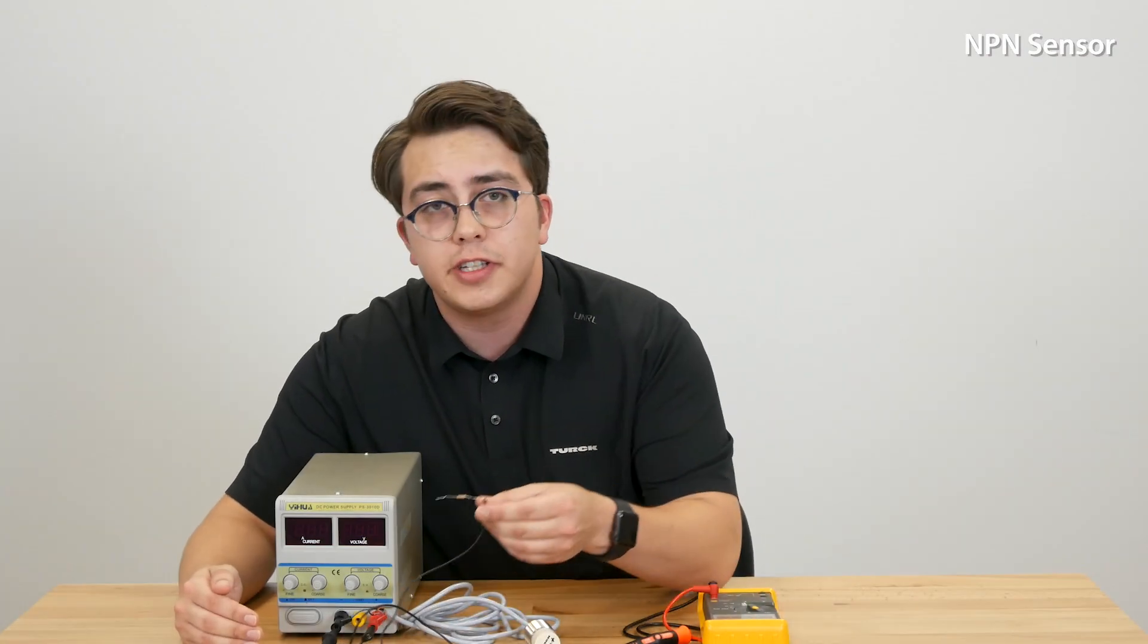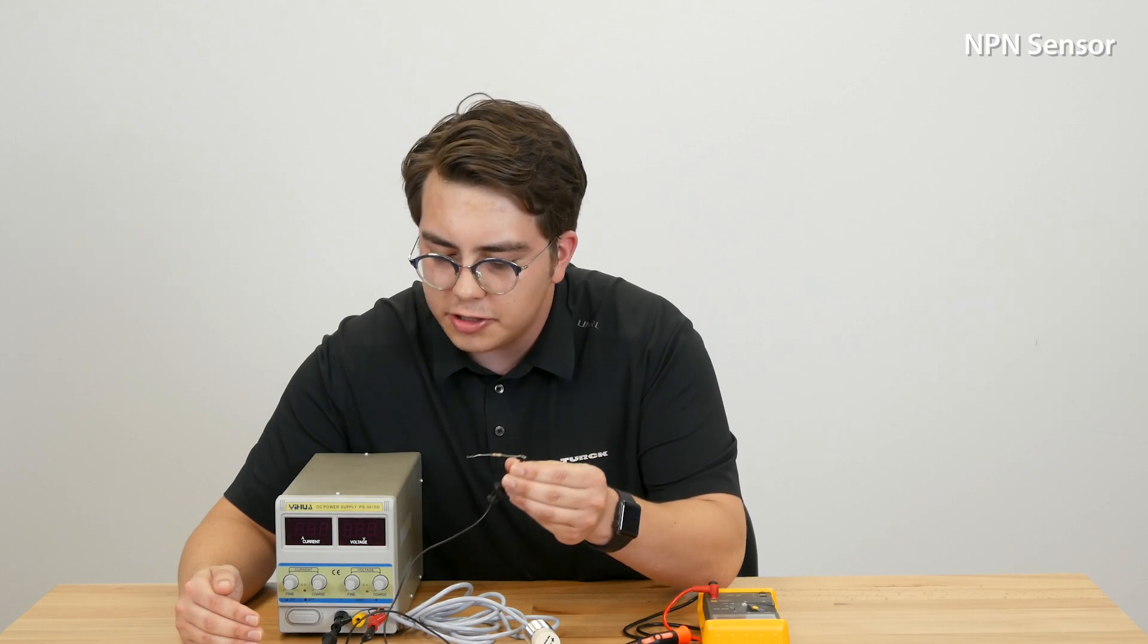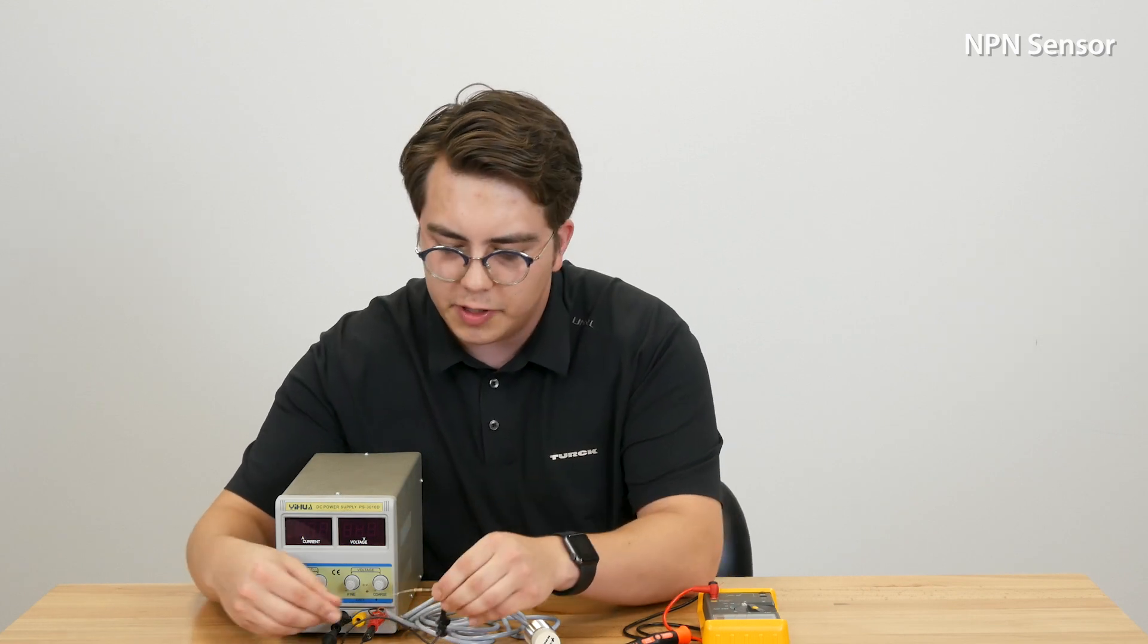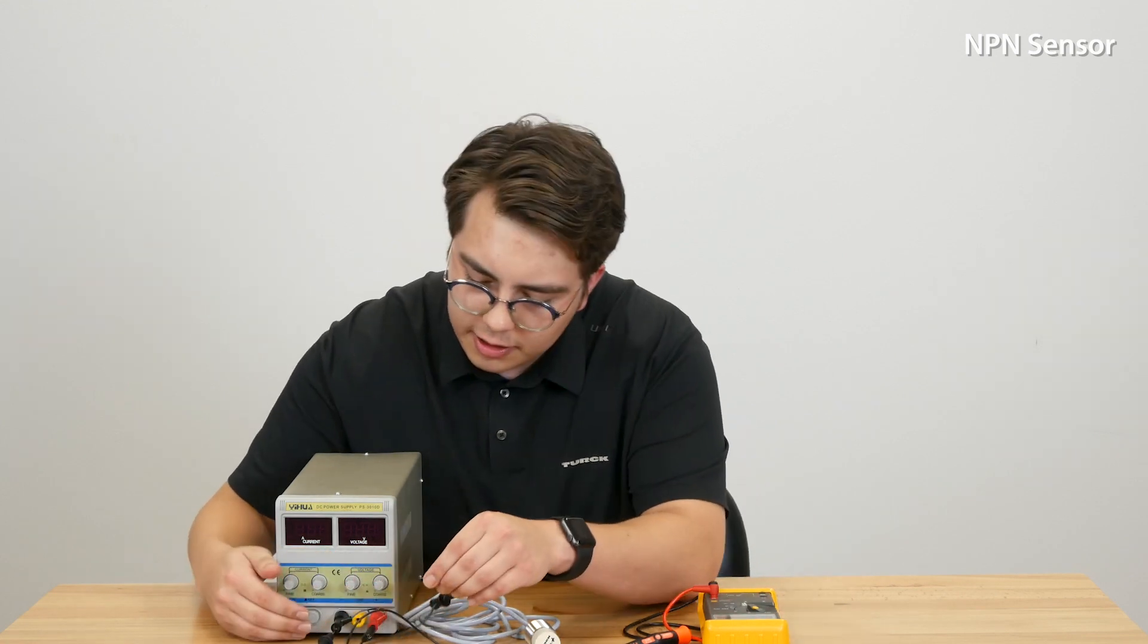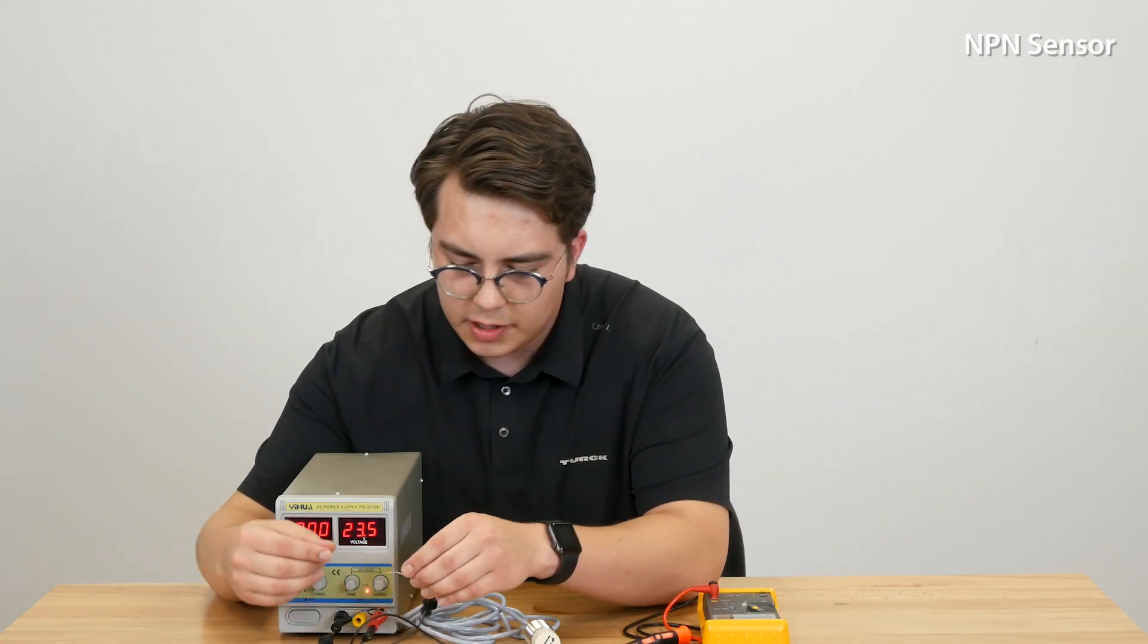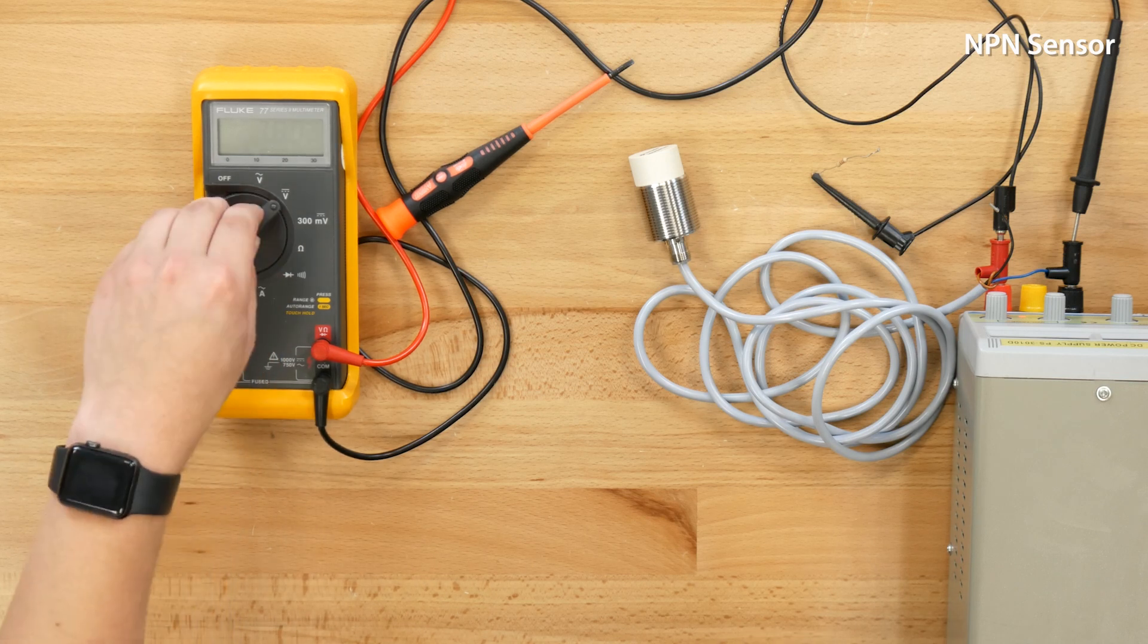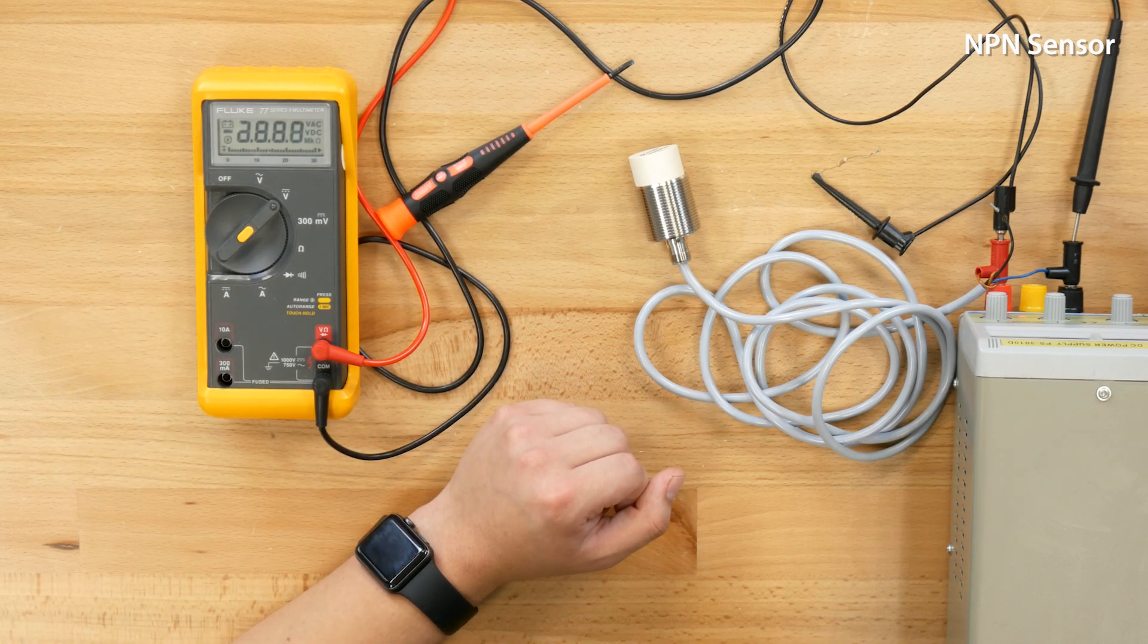So in this case the load that we're using is a resistor and we're just hooking this up in between our output and our 24 volts. So we can turn on our power supply here and we will also turn on our multimeter into voltage measurement mode.